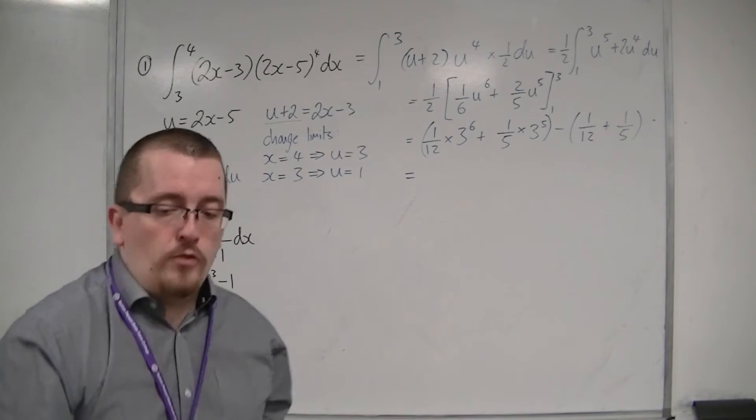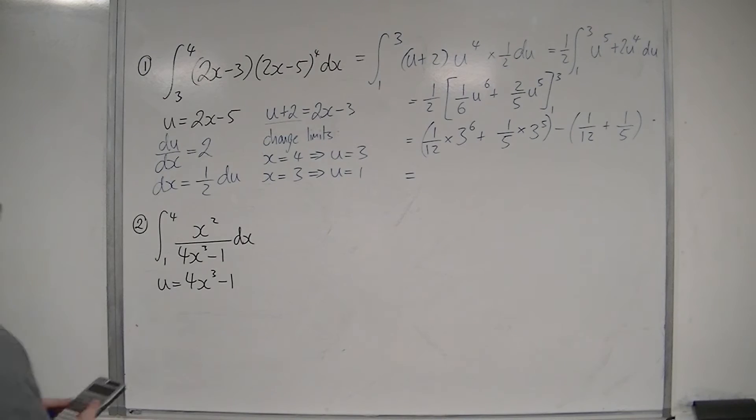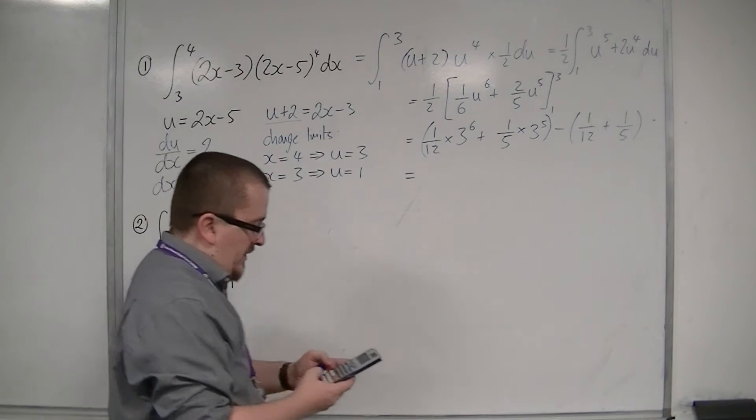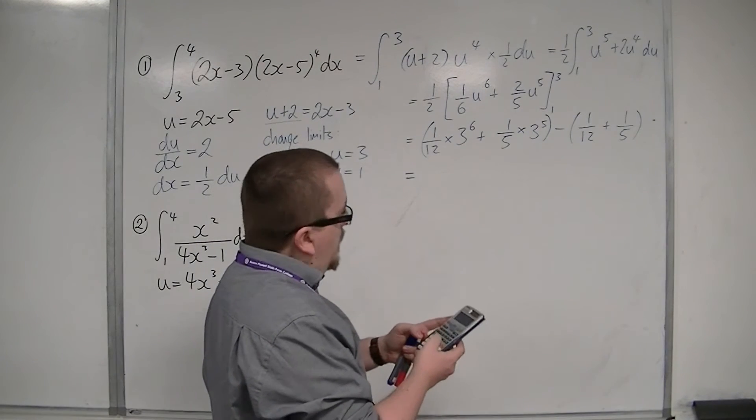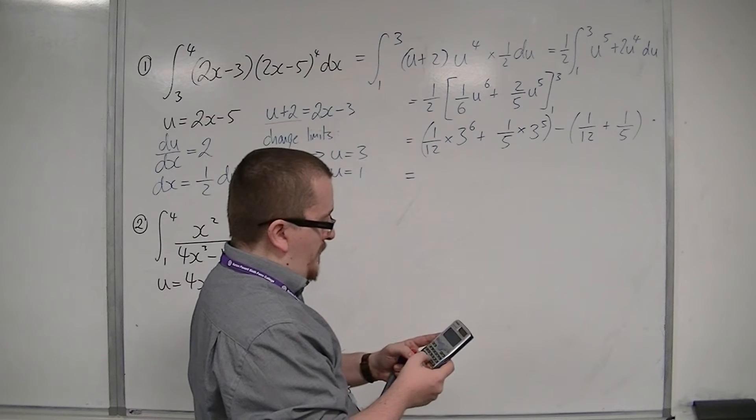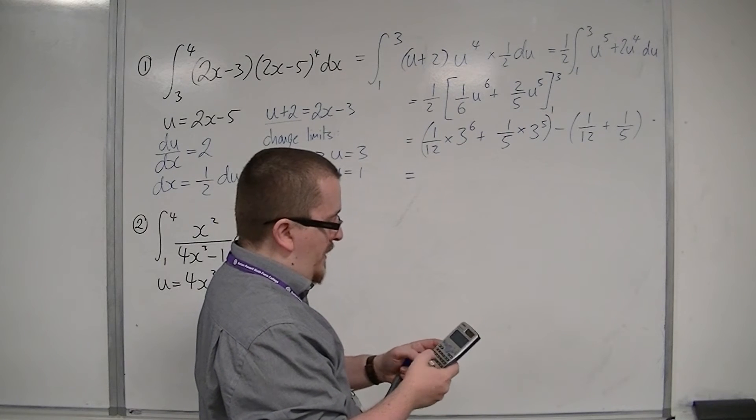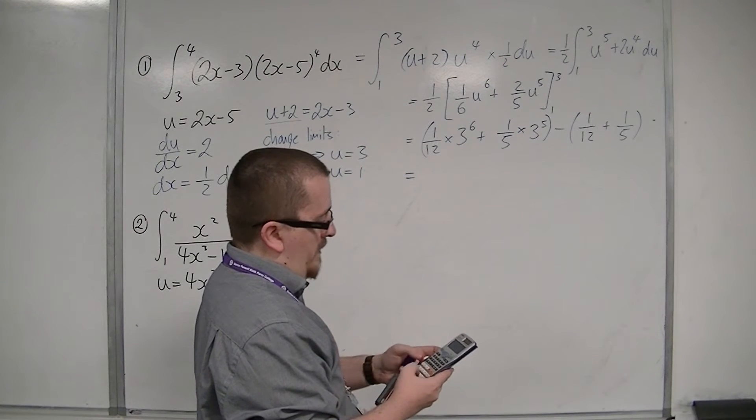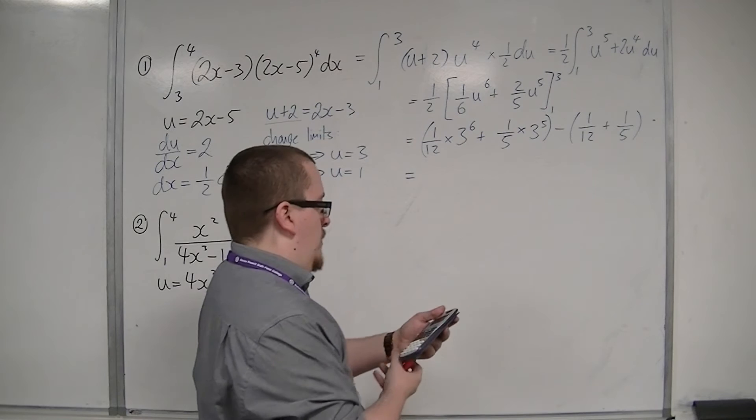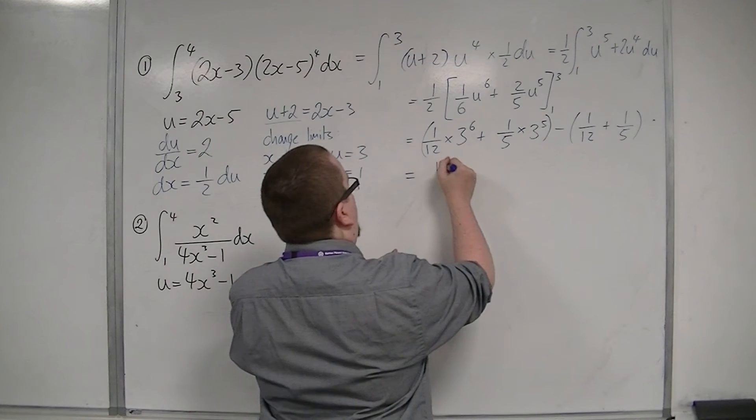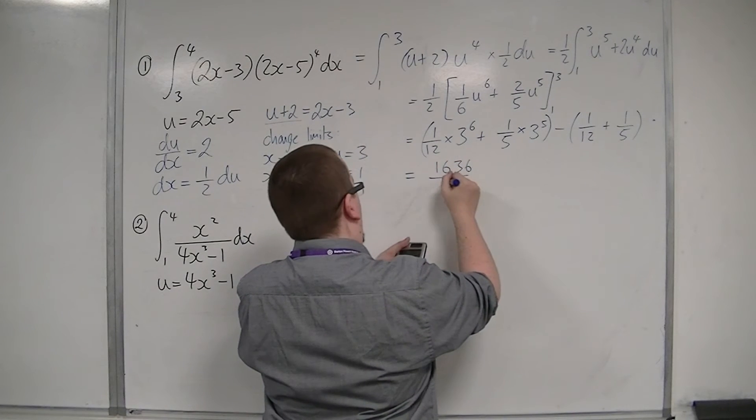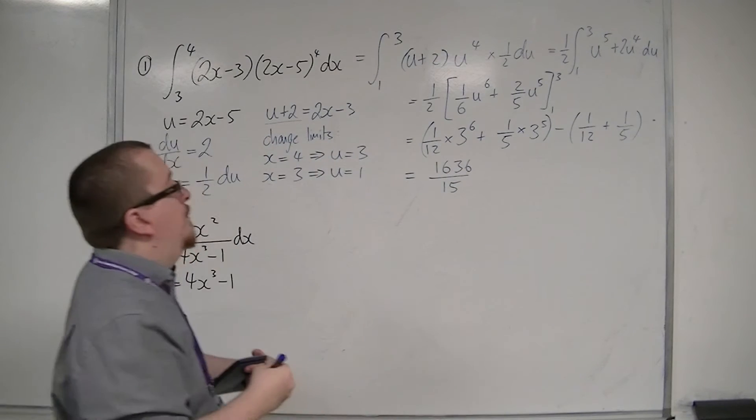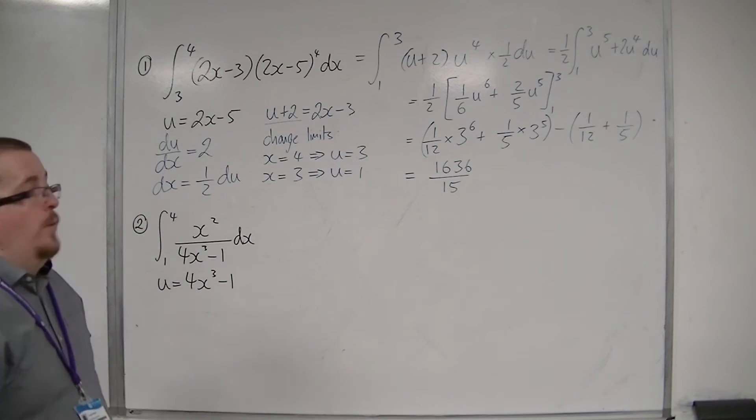So I'll pop that straight into the calculator. So 3 to the power of 6, divided by 12, plus 1 fifth, times 3 to the power of 5, and then take away 1 twelfth plus 1 fifth. So 1,636 over 15. And that is my exact answer for that question.